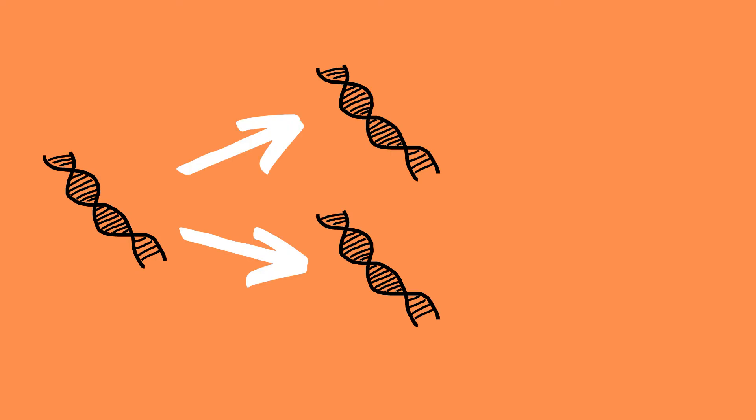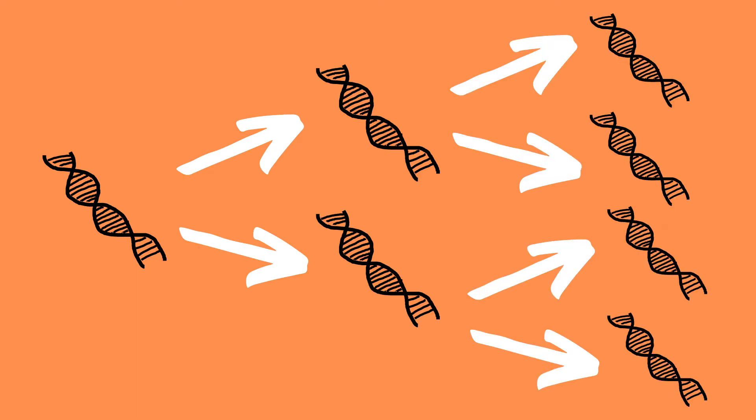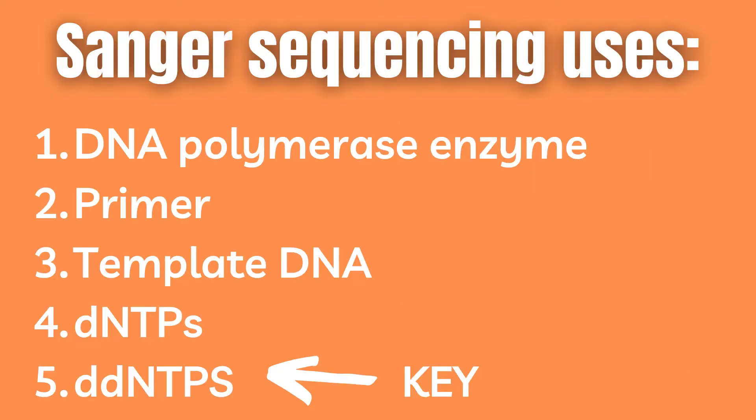To better understand the process, it helps to be familiar with PCR. If that feels unfamiliar to you, I recommend checking out my video on qPCR where I also go through normal PCR in detail. Chain termination sequencing uses DNA polymerase enzyme, a primer, the four DNA nucleotides, and the template DNA which one wishes to sequence.